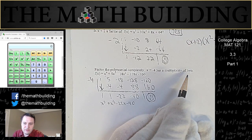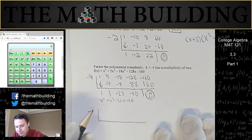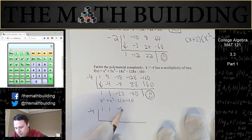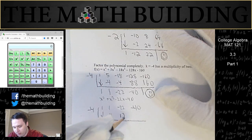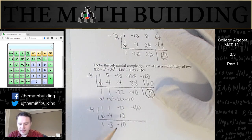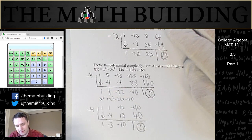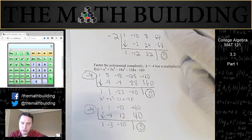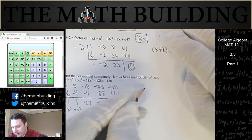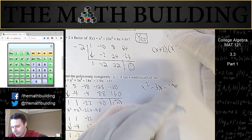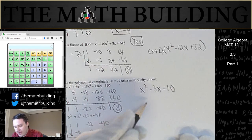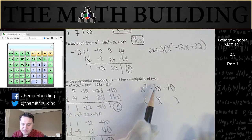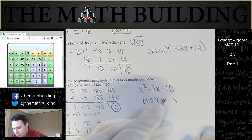Since the multiplicity is 2, we do synthetic division again with negative 4, using the coefficients of the simplified polynomial. 1; negative 4 times 1 is negative 4; add to get negative 3. Negative 4 times negative 3 is 12; add to get negative 10. Negative 4 times negative 10 is 40. Big fat smiley face — there's our negative 4 with multiplicity 2. Our remaining polynomial is x squared minus 3x minus 10, which factors as (x minus 5)(x plus 2), giving us solutions 5 and negative 2.